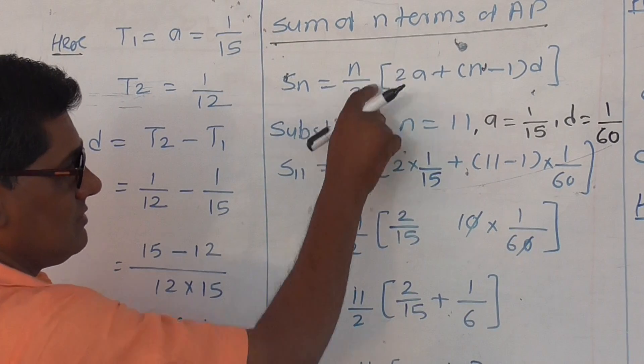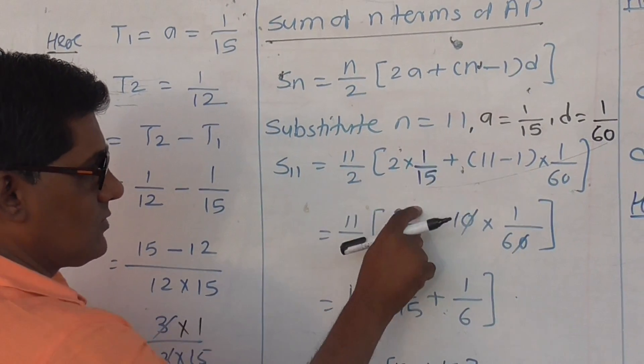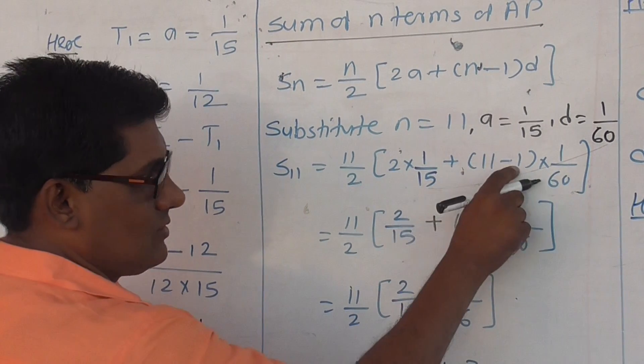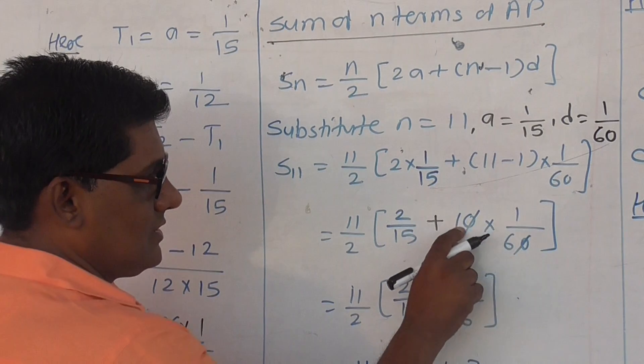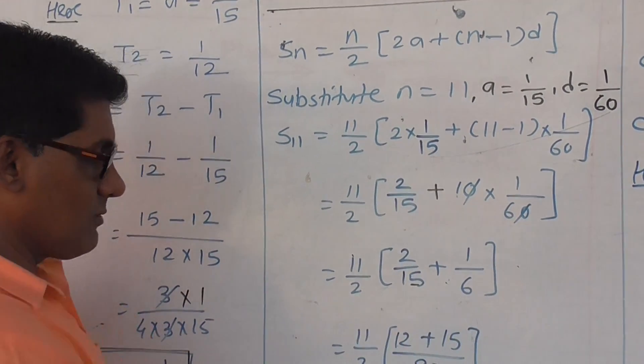11 by 2 times 2 times 1 by 15, which is 2 by 15, plus 11 minus 1 which is 10, times 1 by 60. This simplifies to 1 by 6.